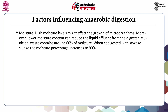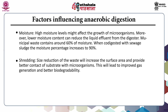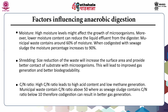Moisture is another important parameter influencing biogas generation. High moisture levels might affect the growth of microorganisms, while lower moisture content can reduce liquid effluent from the digester. Municipal solid waste generally contains around 60% moisture; when co-digested with sewage sludge, the moisture percentage increases to 90%. Minimum processing like shredding or size reduction improves surface area, increasing contact between substrate and microorganisms and improving gas generation performance. Regarding the carbon-to-nitrogen ratio, a higher C:N ratio leads to high acid content and low methane generation. Municipal solid waste has a C:N ratio of around 50, while sewage sludge has a ratio of 10, so co-digestion gives better gas generation.